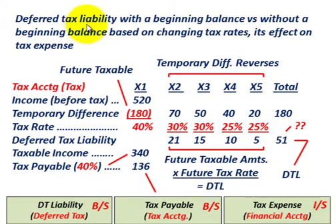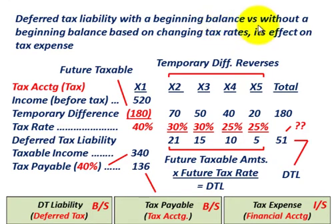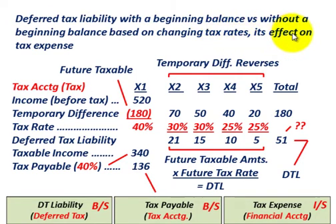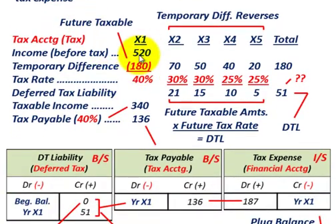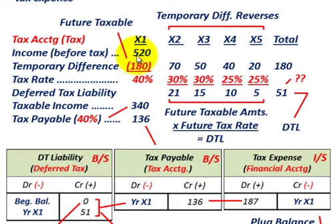What we're going to be going over here is a deferred tax liability with a beginning balance versus without a beginning balance, and it's going to be based on some changing tax rates, and we're going to be looking at its effect on tax expense. This is our example where we're going to look at it from the tax accounting perspective, where we're going to have a temporary difference of $180,000 in year X1.